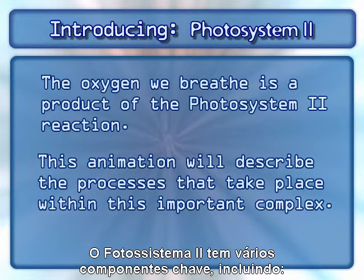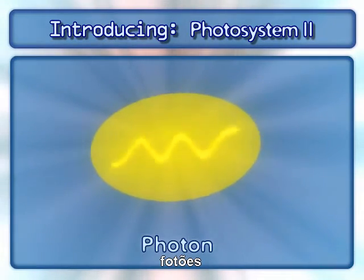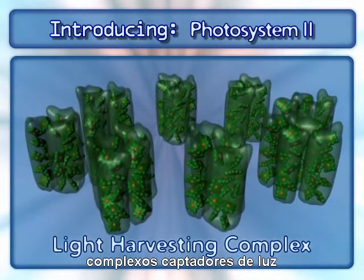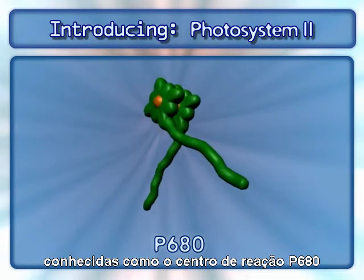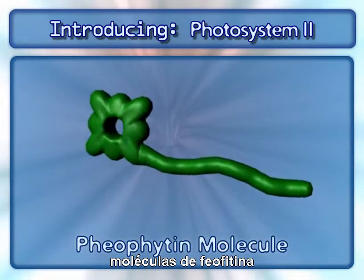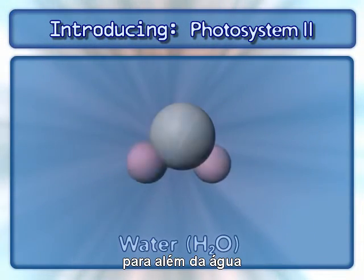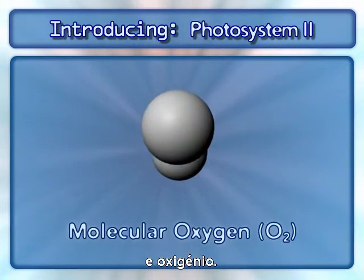Photosystem II involves several key components, including photons, light-harvesting chlorophyll binding proteins, a pair of chlorophyll molecules known as the P680 reaction center, pheophytin molecules, and plastoquinones, along with water and oxygen.